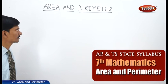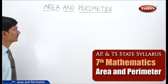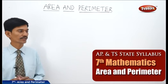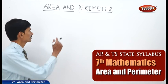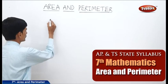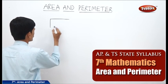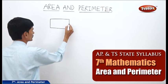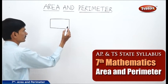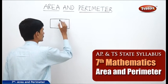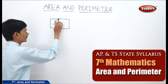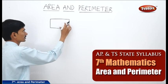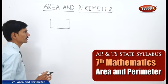Now let us start the next chapter: area and the perimeter. So what is the area of the closed figure? The amount of region occupied by a simple closed figure gives the idea of its area. The perimeter means the total length of the simple closed figure along the boundary is called its perimeter.